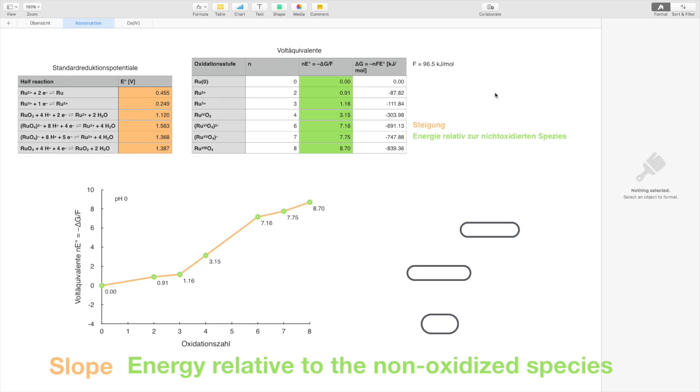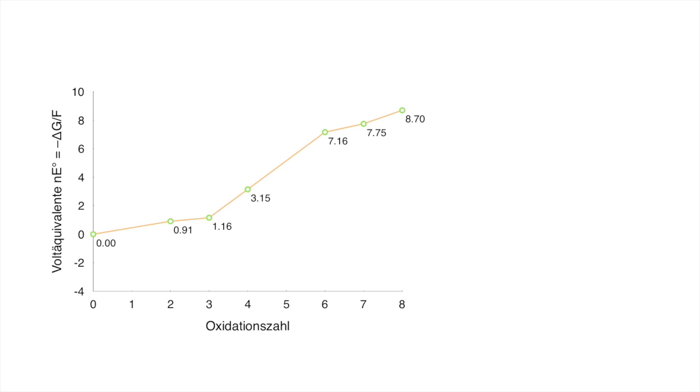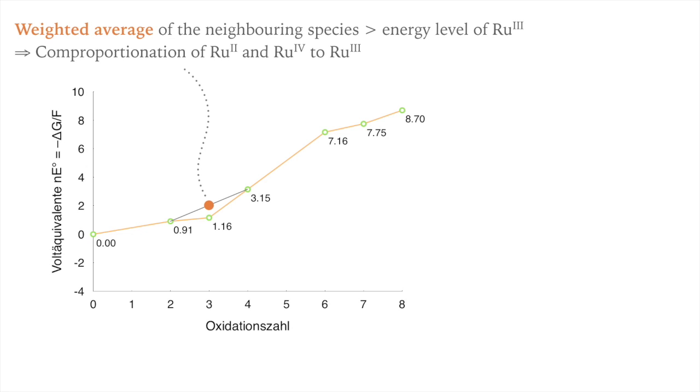The Frost diagram shows whether or not a certain state tends to disproportionate. Ruthenium 3 lies on a concave point. Therefore, this species is thermodynamically stable. A solution that contains the two neighboring species rather tends to comproportionate to ruthenium 3.